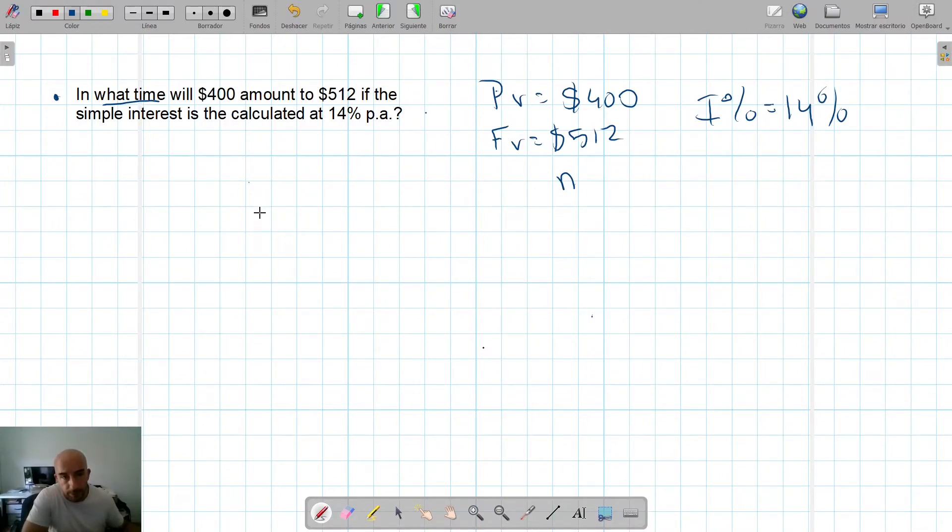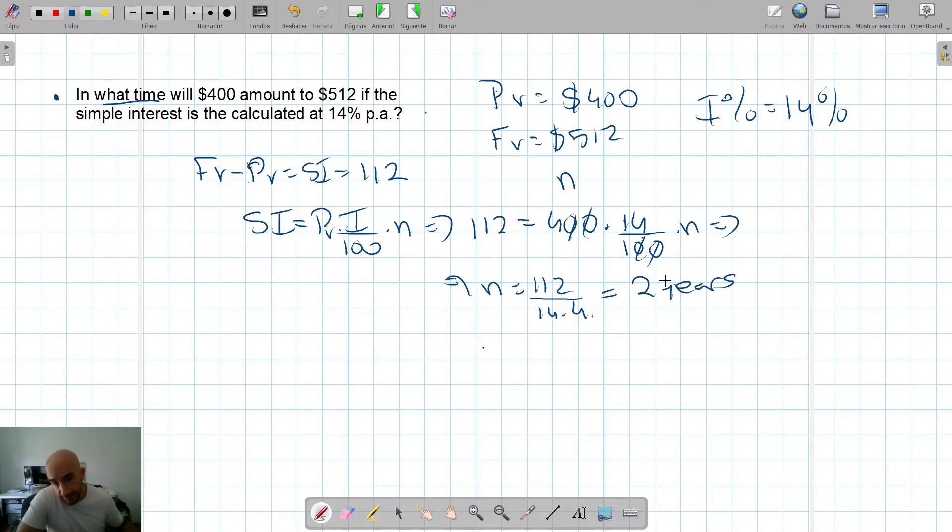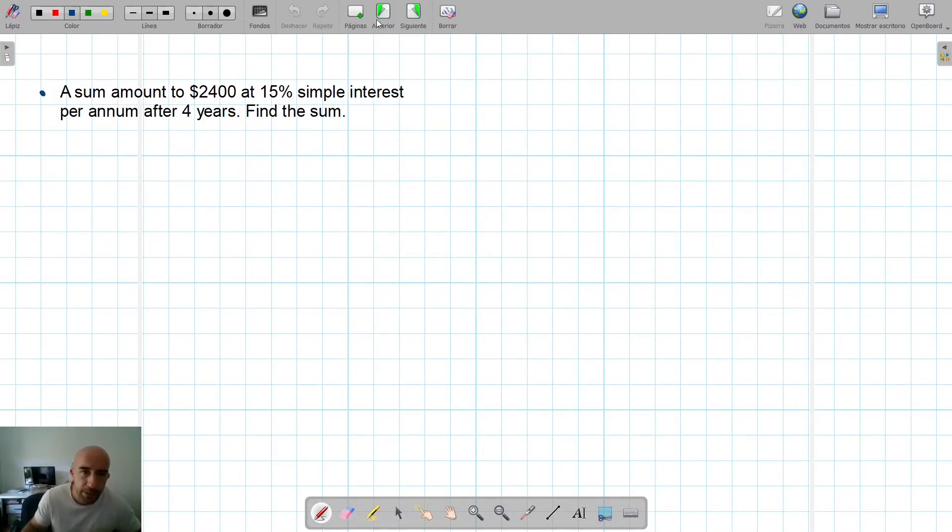How do we do it? Well, again, SI equals PV times I divided by 100 times N in years. How do we calculate SI? Final value minus principal value. This is I, which is 512 minus 400, which is 112. So we get that 112 equals 400 times 14 divided by 100 times N. So if we do that, N is 112 divided by 14 times 4. So that's 112 divided by 14 divided by 4. So that's two years. As N in the formula is in years. Again, very straightforward, but we can't do it using the Casio calculator.